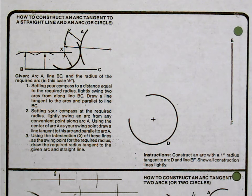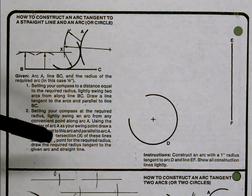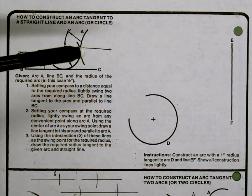This is the top of 5-8, and what you're doing is constructing an arc tangent to both a straight line and another arc. Or as I like to look at it, this is just another form of creating a fillet.